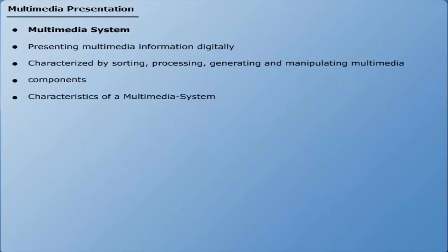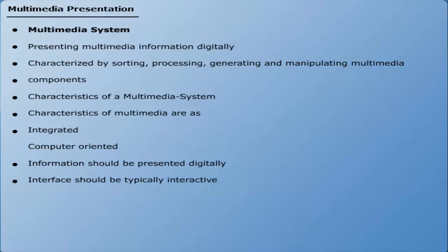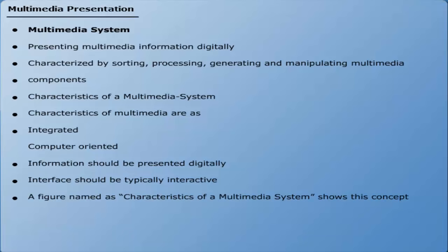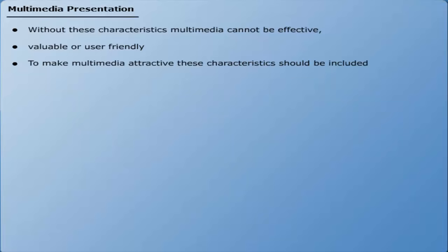Characteristics of a Multimedia System. There are four main characteristics of a multimedia system: Number 1, the multimedia systems should be integrated. Number 2, a multimedia system must be computer controlled. Number 3, the information which these systems handle should be represented digitally. Number 4, the interface towards the final presentation of medium should be typically interactive. Without these characteristics, a multimedia application can't be effective, valuable or user-friendly, so these characteristics should be included in it.